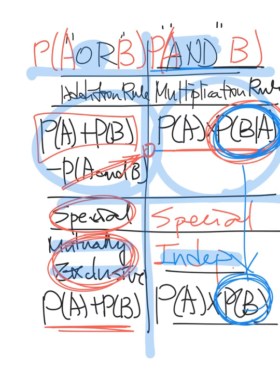Always we have two cases. You know, at the very beginning we had two variable types: categorical and numerical. And numerical had another two types: discrete and continuous. Now we have two cases: OR — and another two cases — the general one and the special one.